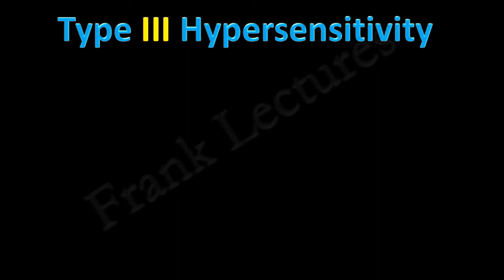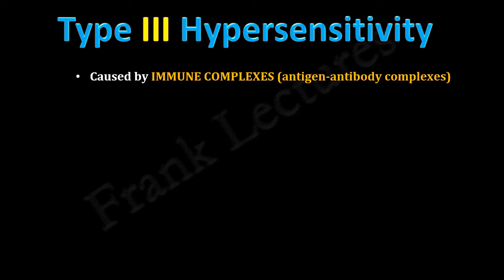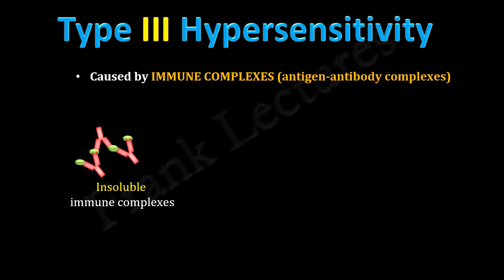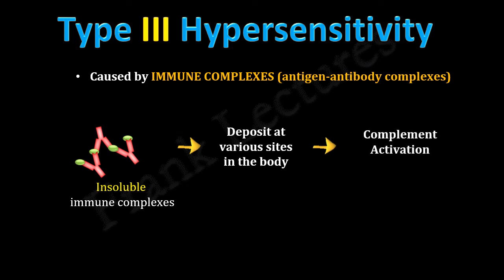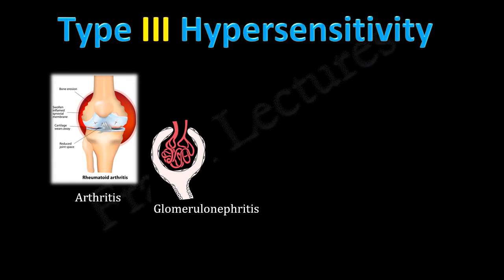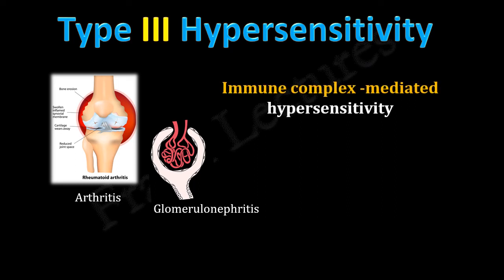Type 3 hypersensitivity reactions are caused by immune complexes, or antigen-antibody complexes. These insoluble immune complexes are formed by antigen and specific IgG antibodies. In normal situations, small and soluble immune complexes are phagocytosed by dendritic cells and macrophages. But insoluble immune complexes deposit at various sites in the body — for example, in the walls of blood vessels — and their accumulation results in the activation of complement proteins. The resulting inflammatory response damages the tissue. Arthritis and glomerulonephritis are consequences of type 3 hypersensitivity reactions. They are also known as immune complex-mediated hypersensitivity and take 2 to 8 hours to develop.